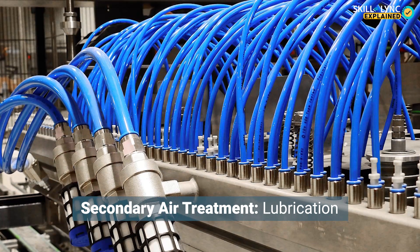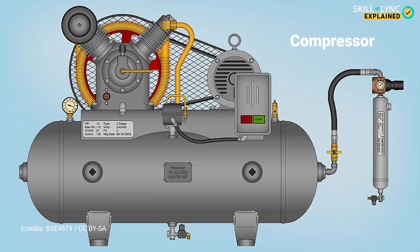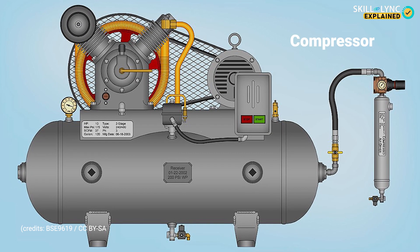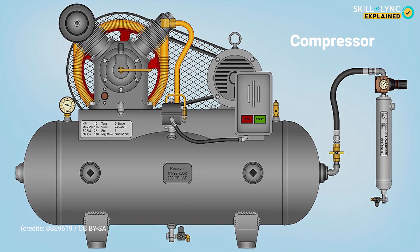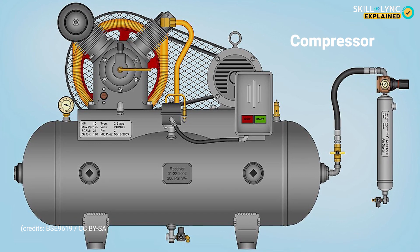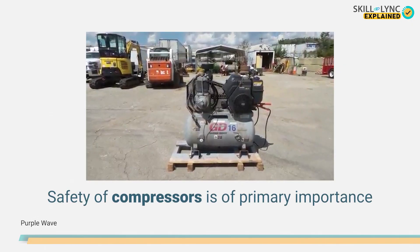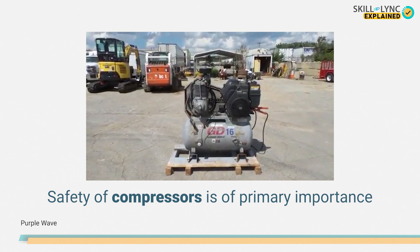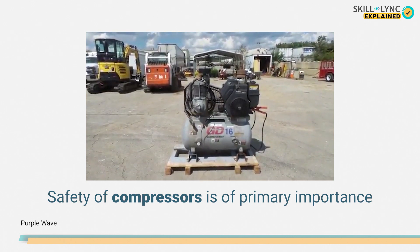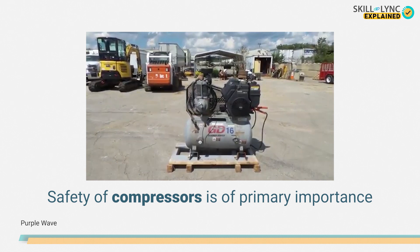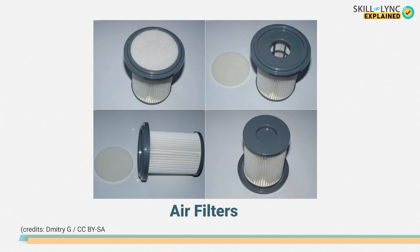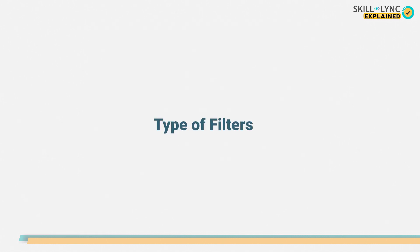Let's discuss these stages one by one. First of all, the air to be used in the system needs to be pressurized. To pressurize the air, compressors are used. But compressors are delicate machinery and any foreign contaminant can severely damage them. Thus, filters are used to remove dust and smoke particles from the air.